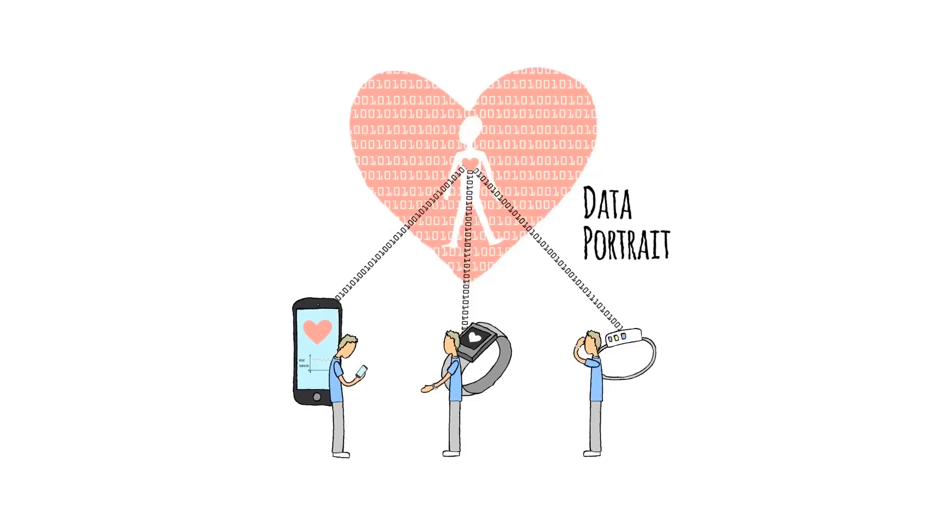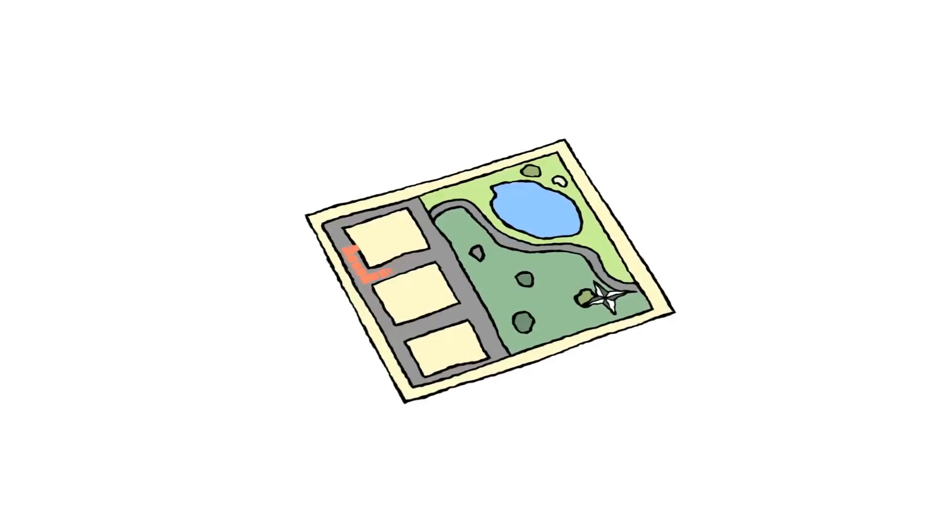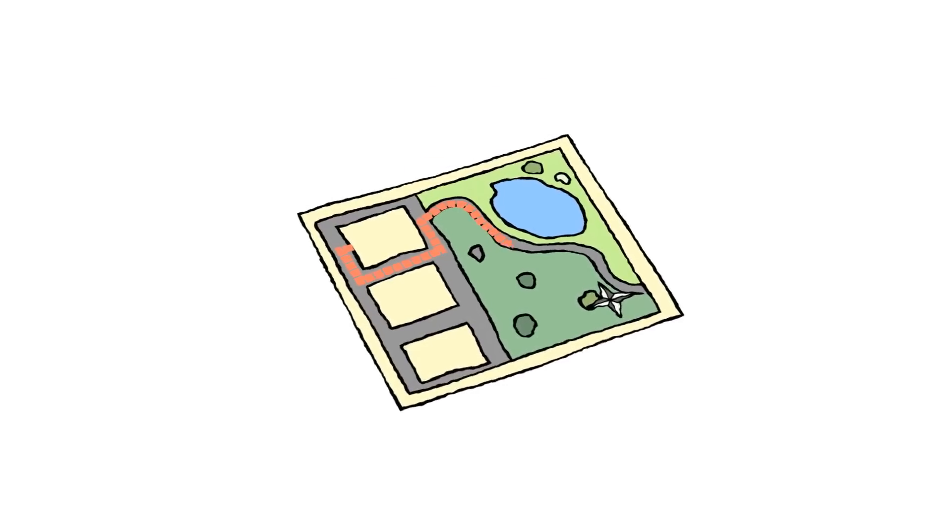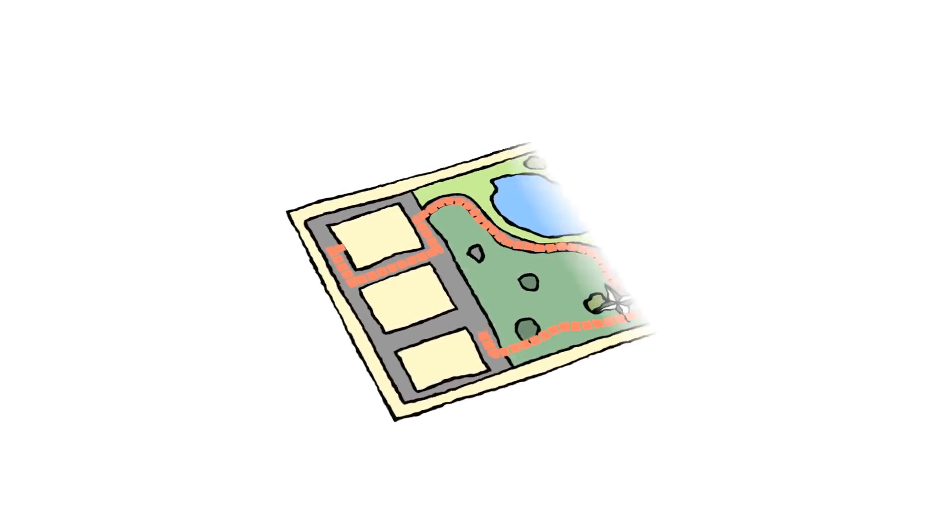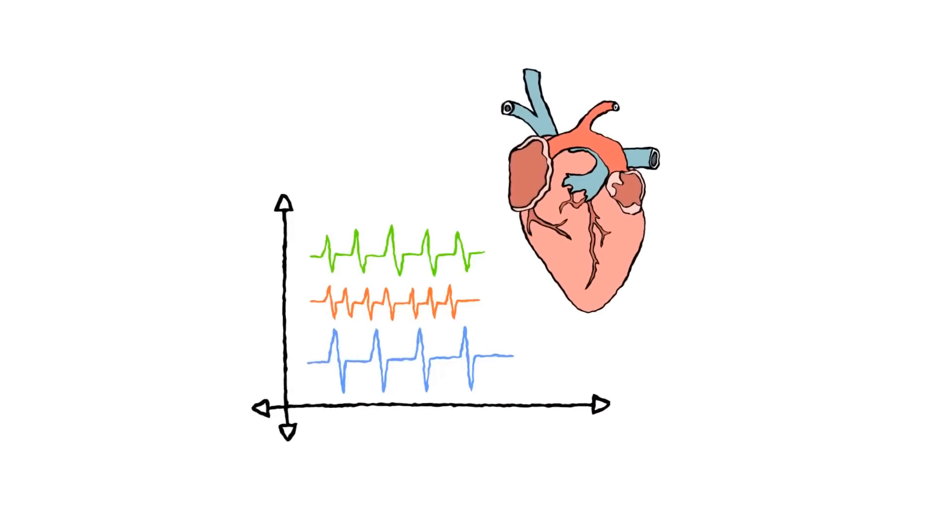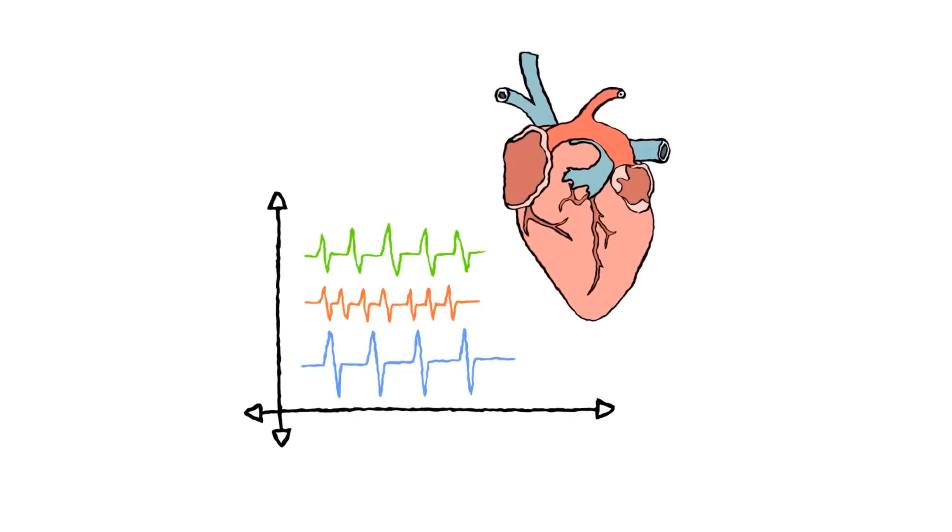There are all kinds of things you can now track. Pedometers and GPS trackers let you see how active you are and how far you walk or run each day. Heart rate monitors track your heart's activity changes in response to things like stress.